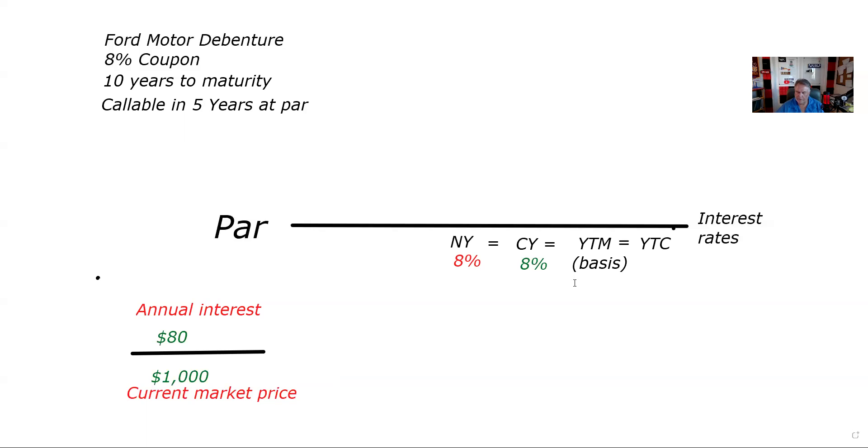If you buy this Ford Motor Company debenture at par and you hold it to maturity, you wouldn't make or lose any money to maturity. You would make 8%.